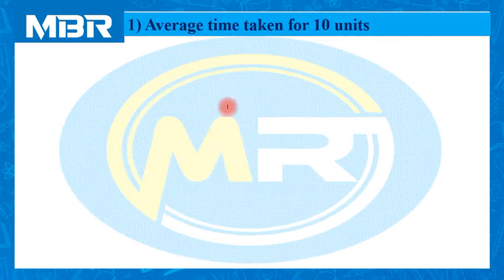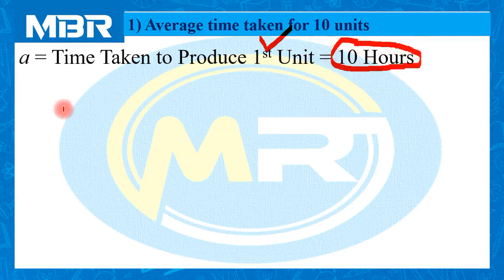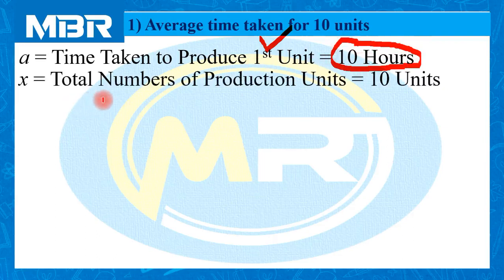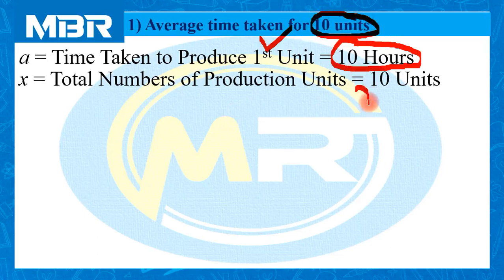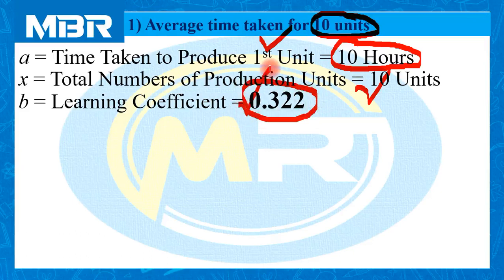The first item we need to calculate is the average time taken for 10 units. A, the time taken to produce the first unit, is 10 hours — this information is ready-made given to us. X, the total number of production units, is 10, as we are calculating for 10 units. B, the learning coefficient, is 0.322, also ready-made given in our question.